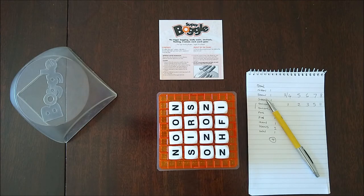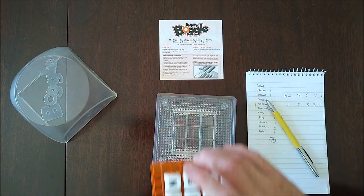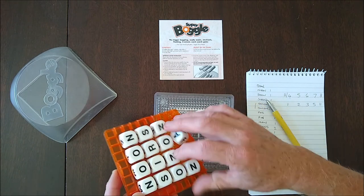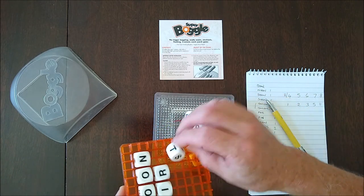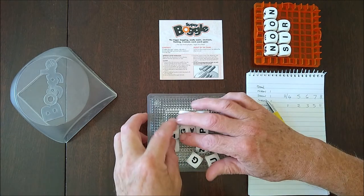Now I have what's called the Super Boggle, which is a variation on the game. I can take this rack out, and underneath is a three-by-three rack. So you could play with just nine dice and make up words like that.